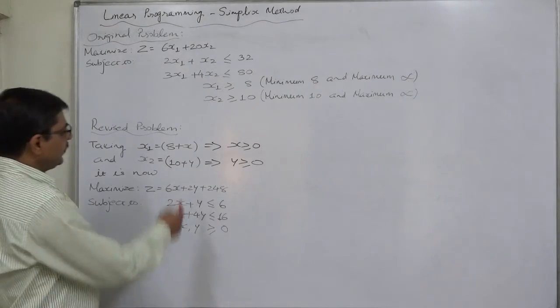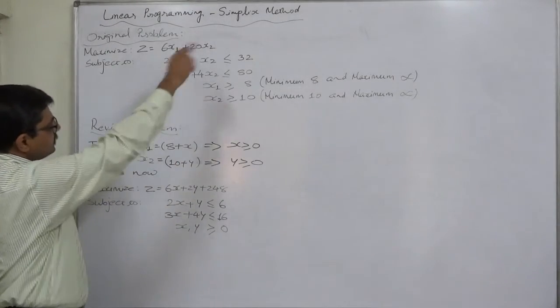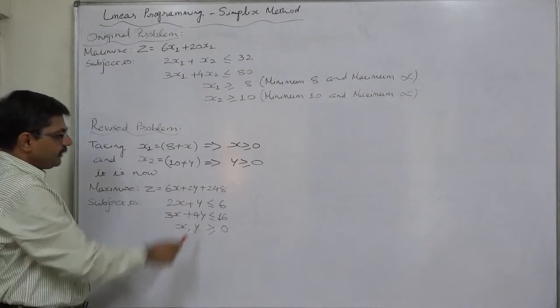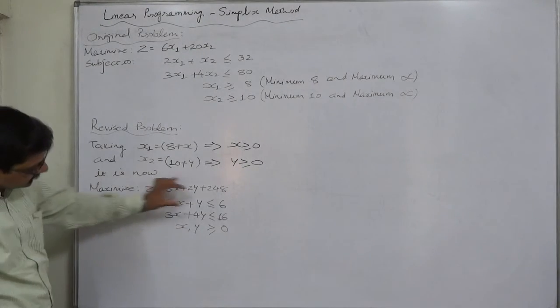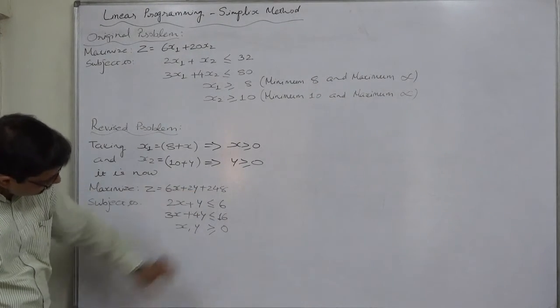And if we substitute these two in the original problem, the revised problem will be like that. Now, we have maximization and two constraints with less than or equal to sign.